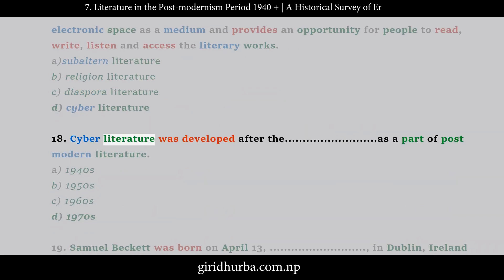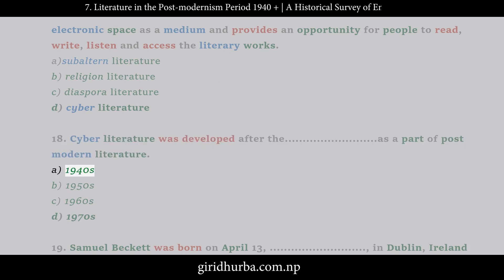Question 18: Cyber Literature was developed after the — as a part of postmodern literature. A. 1940s. B. 1950s. C. 1960s.